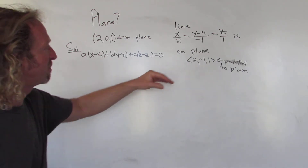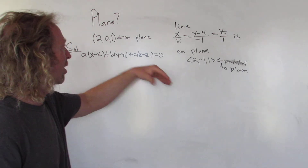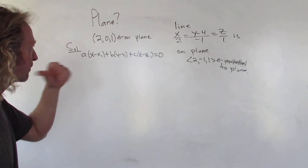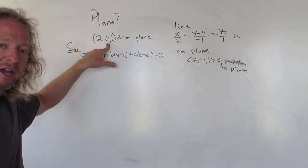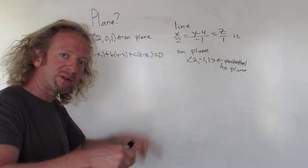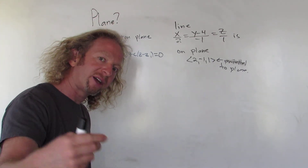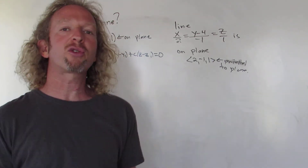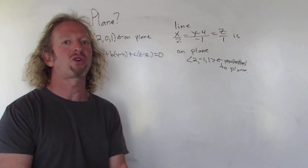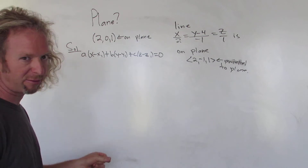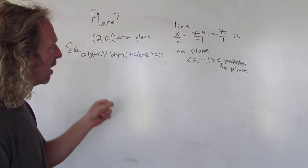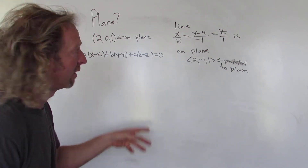So we have a vector that's parallel to our plane, and we have a point in the plane. If we had one more point, we could find another parallel vector, take the cross product, and get a normal vector. So how do we find another point?